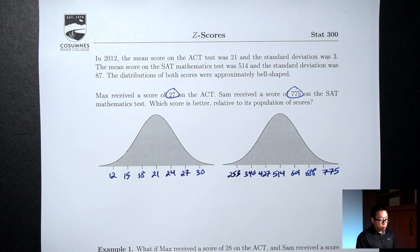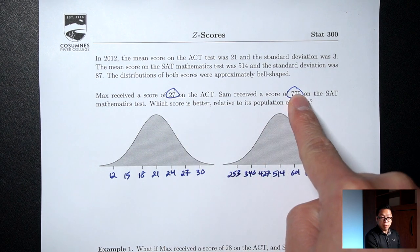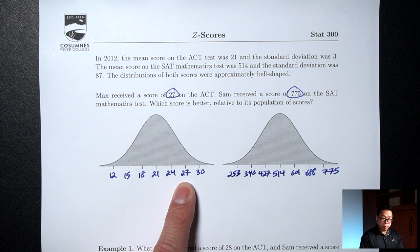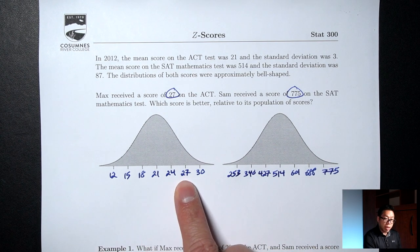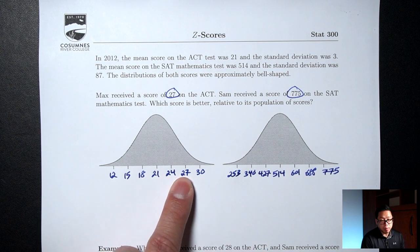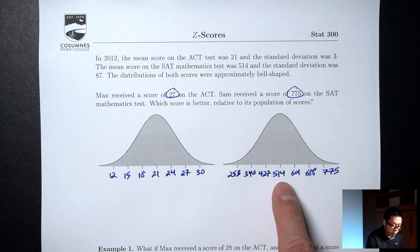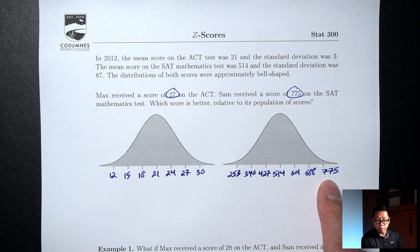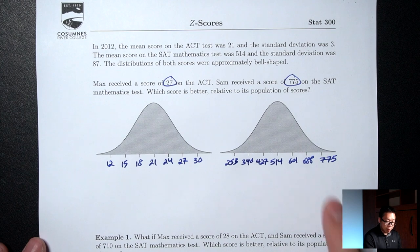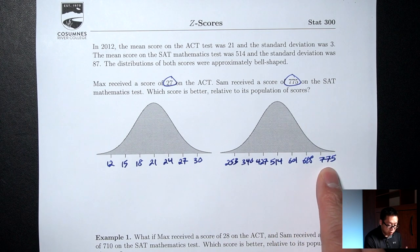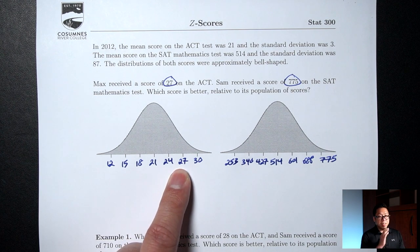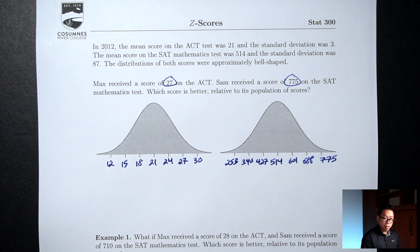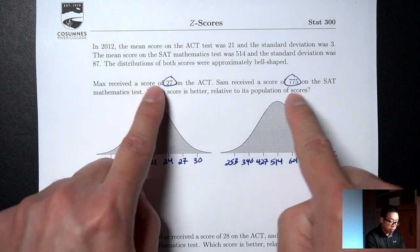Now notice where the 27 and the 775 are. The 27 is two steps above the middle. The 775 is three steps above. So can we say that 775 is better because it's three steps above versus the 27 which is only two steps above? Is that a valid way to compare? It turns out that yes, comparing how many steps above each score is is a valid way to compare.